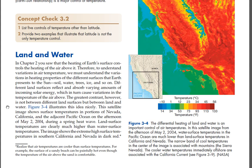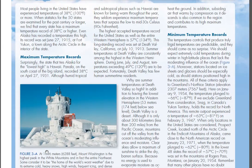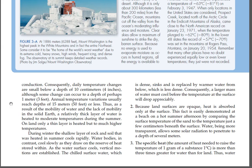This satellite image shows surface temperatures in portions of Nevada, California, and the adjacent Pacific Ocean on the afternoon of May 2, 2004, during a spring heat wave. Land surface temperatures are clearly much higher than water surface temperatures. The image shows the extreme high surface temperatures in Southern California and Nevada in dark red. Surface temperatures in the Pacific Ocean are much lower. The peaks of the Sierra Nevada, still capped with snow, form a cool blue line down the eastern side of California. In side-by-side bodies of land and water (Figure 3-4), land heats more rapidly and to higher temperatures than water, and cools more rapidly and to lower temperatures than water. Variations in air temperatures are therefore much greater over land than over water.